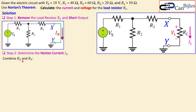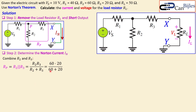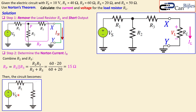To find In, I combine R2 and R3 first. Their parallel combination, called RP, is calculated as (R2 × R3) / (R2 + R3) = (60 × 20) / (60 + 20), which gives exactly 15 ohms. The circuit then simplifies to a series combination of Vs, R1, and RP, with point P in between and voltage VP between point P and ground.